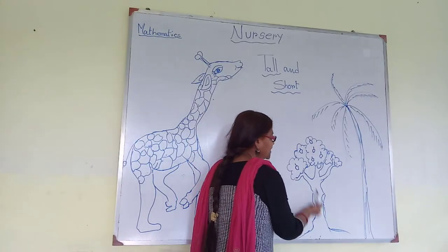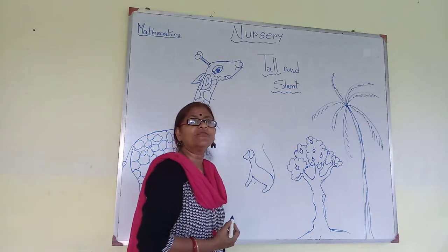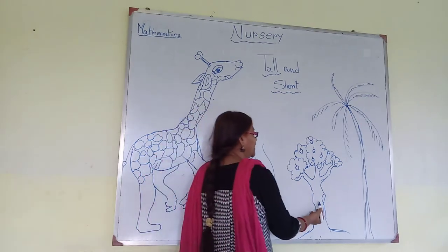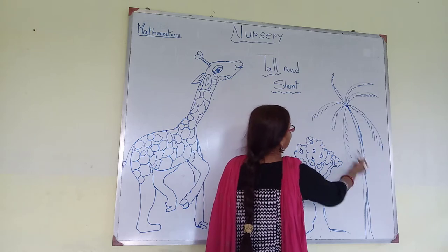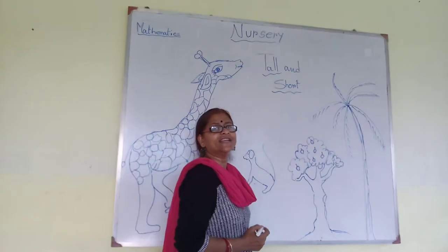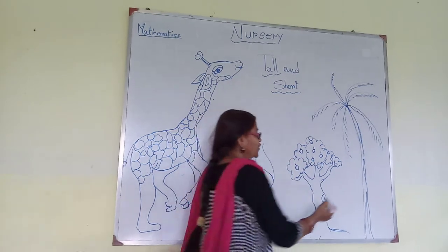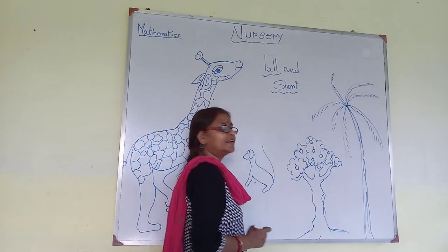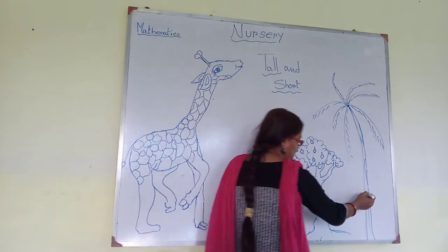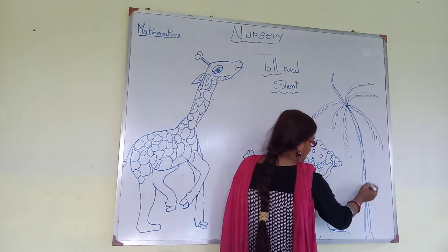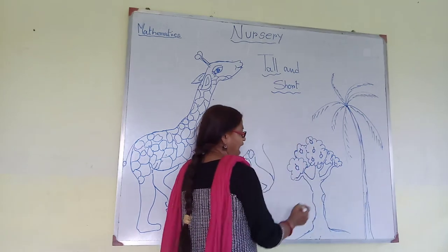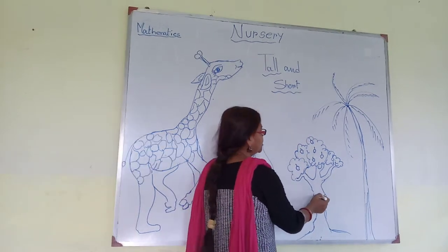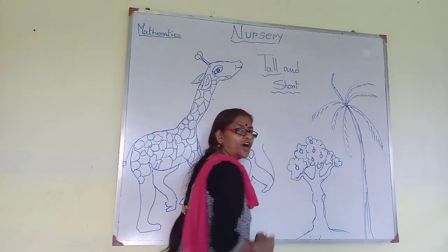Here is a picture of a mango tree. A mango tree is shorter than a coconut tree. Here the coconut tree is tall. This is tall, this is tall, this is tall. And this is short, this is short, this is short.